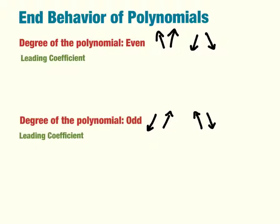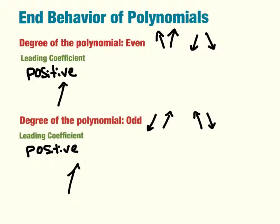So now we've limited it to four choices, two for each — even or odd. How do we figure out if it's both up or both down? That's by looking at the leading coefficient. If the leading coefficient is positive, then it will end in an up direction. Because the degree of the polynomial is even, I know that they must both go in the same direction. So an even degree with a leading coefficient that's positive — you'll have two arrows up.